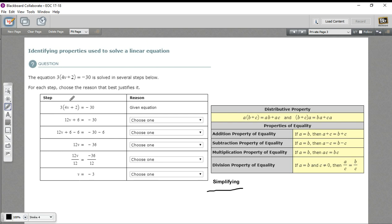We have this problem, 3 times quantity 4V plus 2 equals negative 30. So the first thing you want to deal with is the parentheses here, and we've got this number right outside the parentheses, that means we need to distribute it. So we're going to multiply 3 times 4V, that makes 12V, and that's what we've got in the next step.